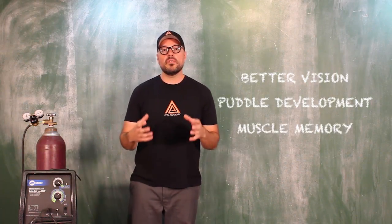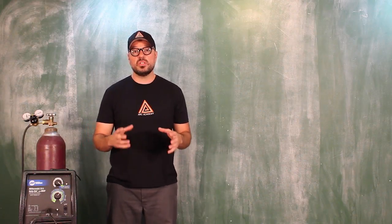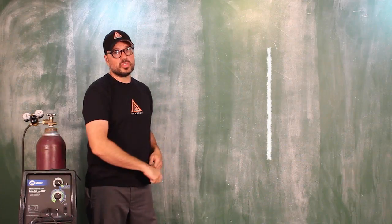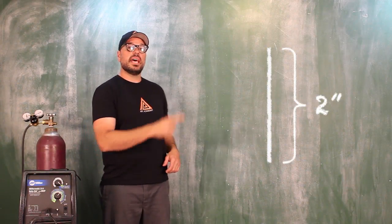So what we're going to do for our first exercise is we're going to take some 12-gauge material and we are going to put a line down with our soapstone, a two-inch line. Then we are going to attack at the top and we are going to attack at the bottom.